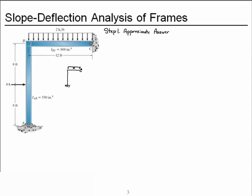If we consider each of the two loads — the uniform distributed load and the horizontal load — acting independently, I can sketch the elastic curve, that is the deflected shape, if there's just the uniform distributed load, and we'll get something like that.